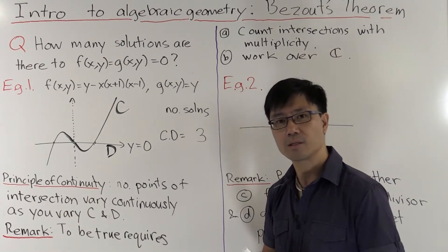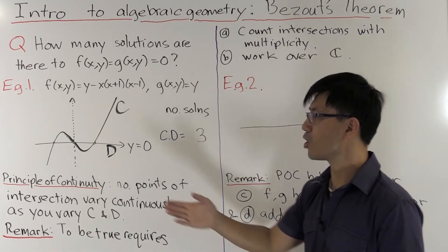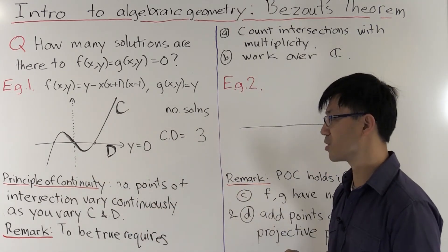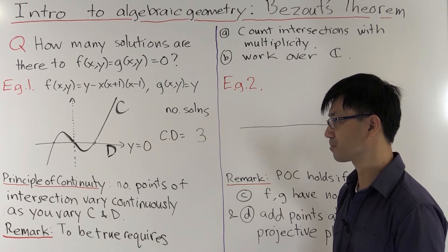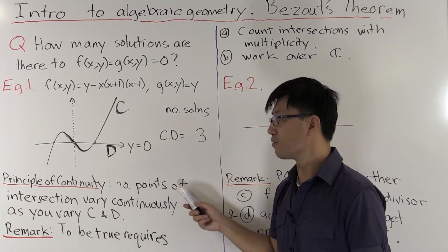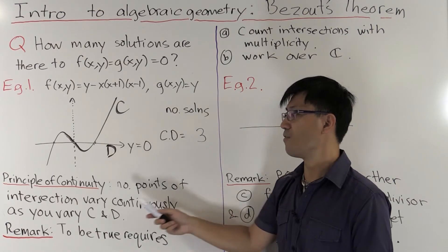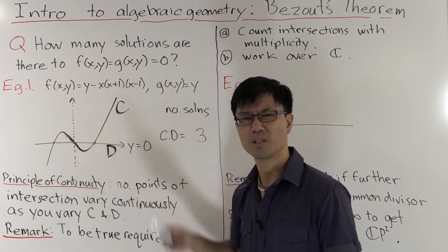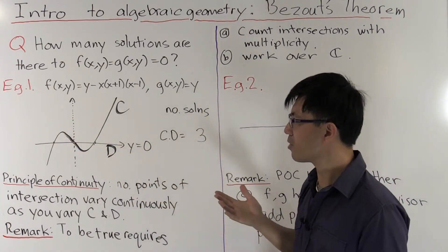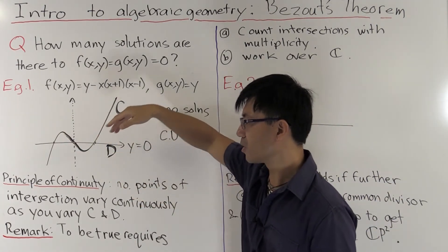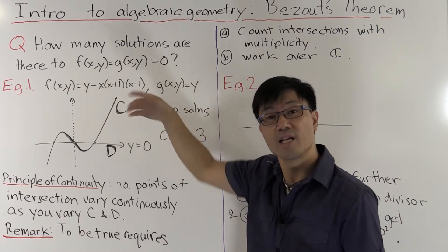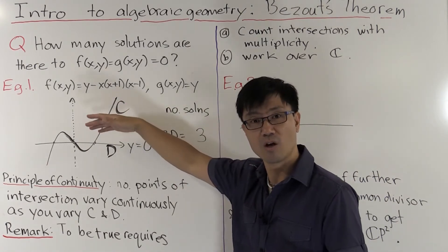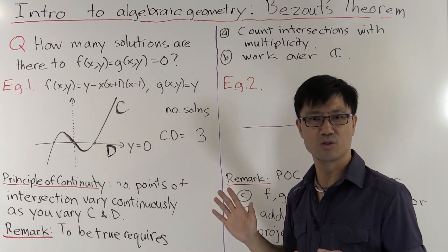If you want to think about this in general, we need to know about the principle of continuity. It states that the number of points of intersection varies continuously as you vary the curves C and D. What does it mean to vary the curves? You really need a topological space whose points are given by these curves — that's quite a subtle point.